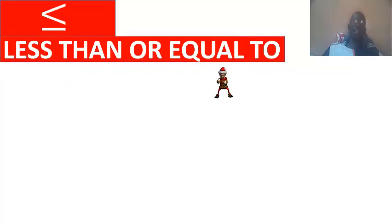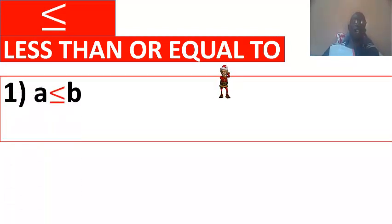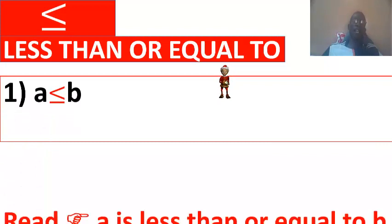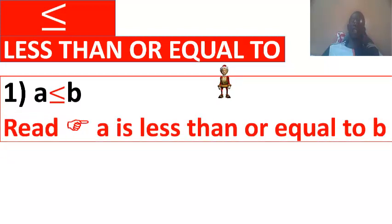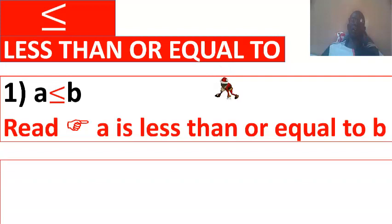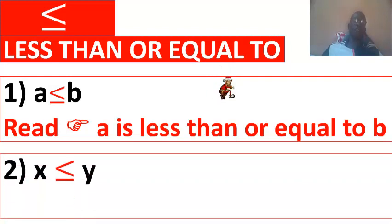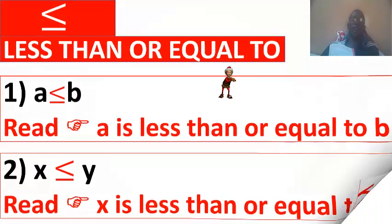Here you have less than or equal to, inferior or equal to. A inferior or equal to B, A is less than or equal to B. X is inferior or equal to Y, X is less than or equal to Y.